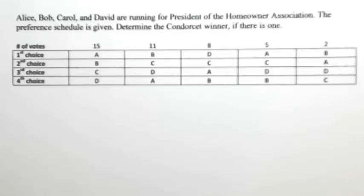Alice, Bob, Carol, and David are running for president of the Homeowner Association. The preference schedule is given. Determine the Condorcet winner if there is one.